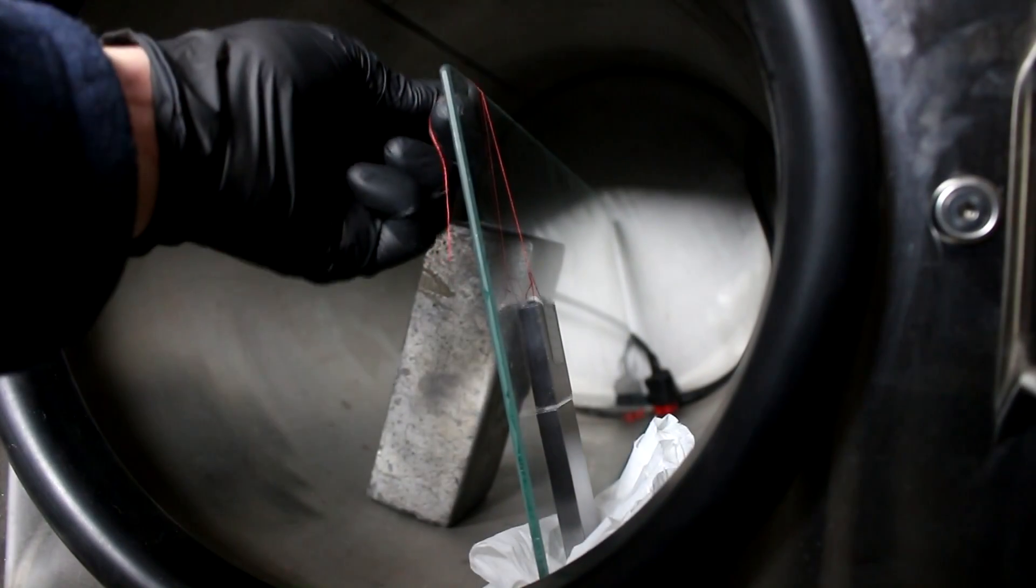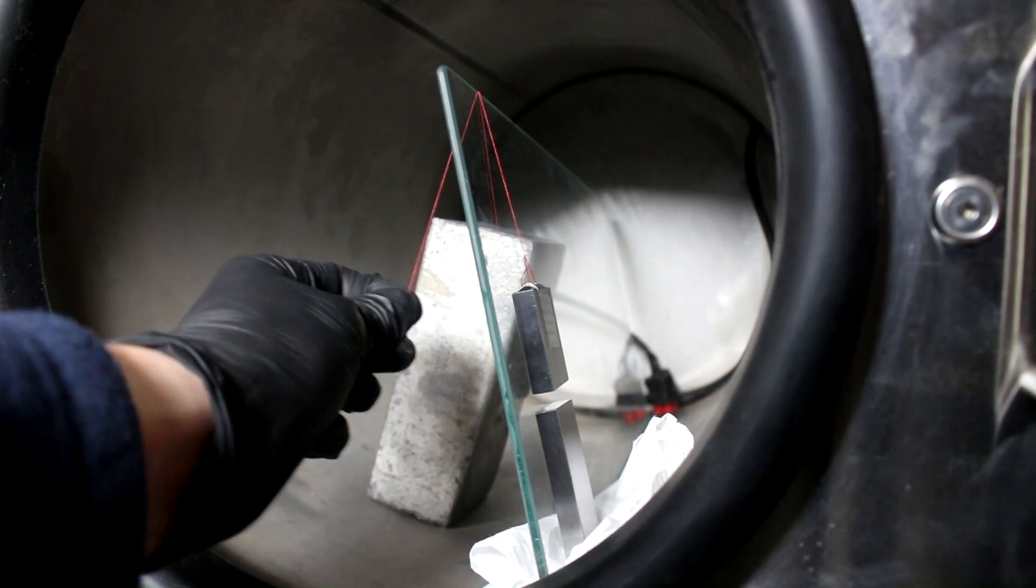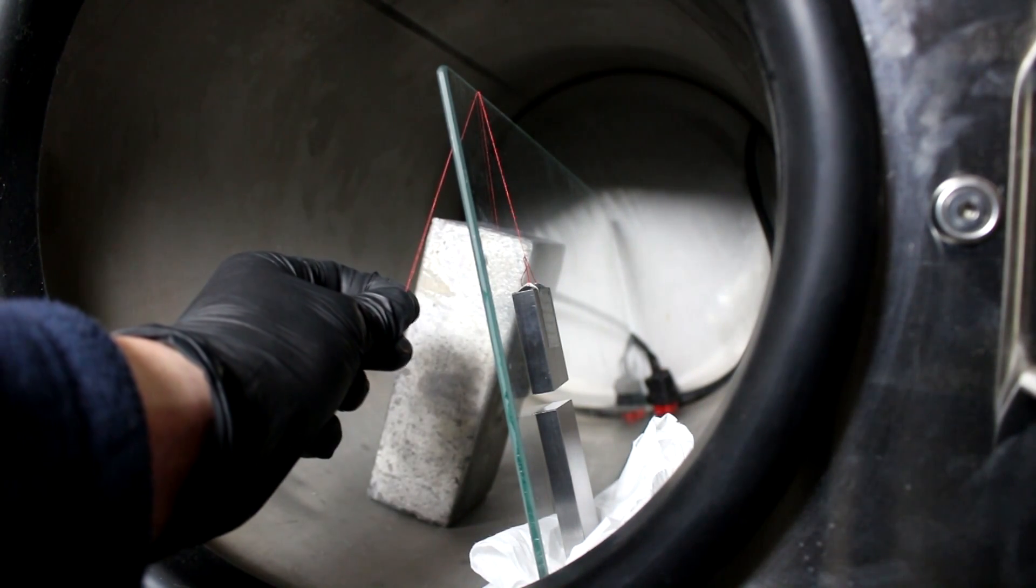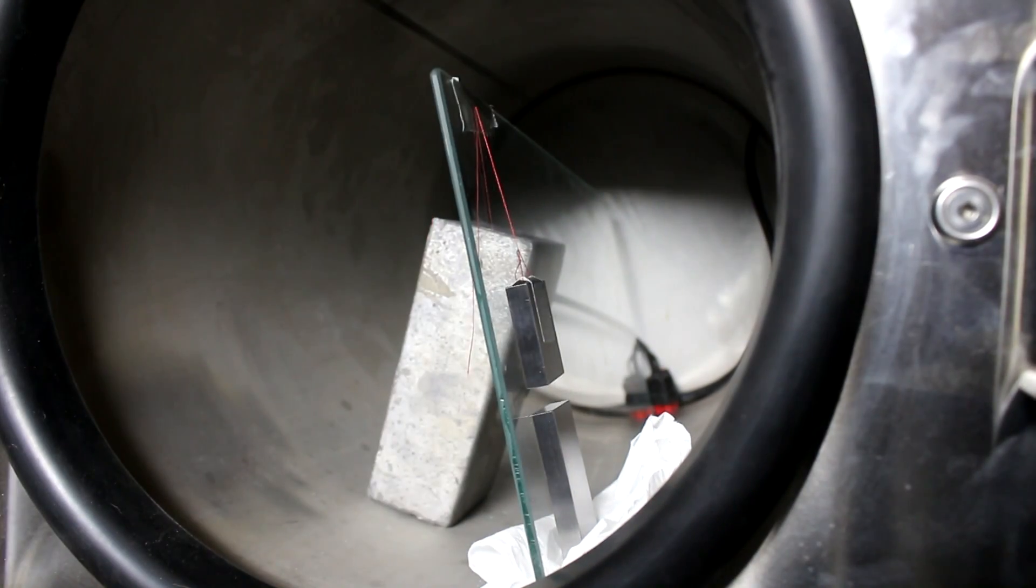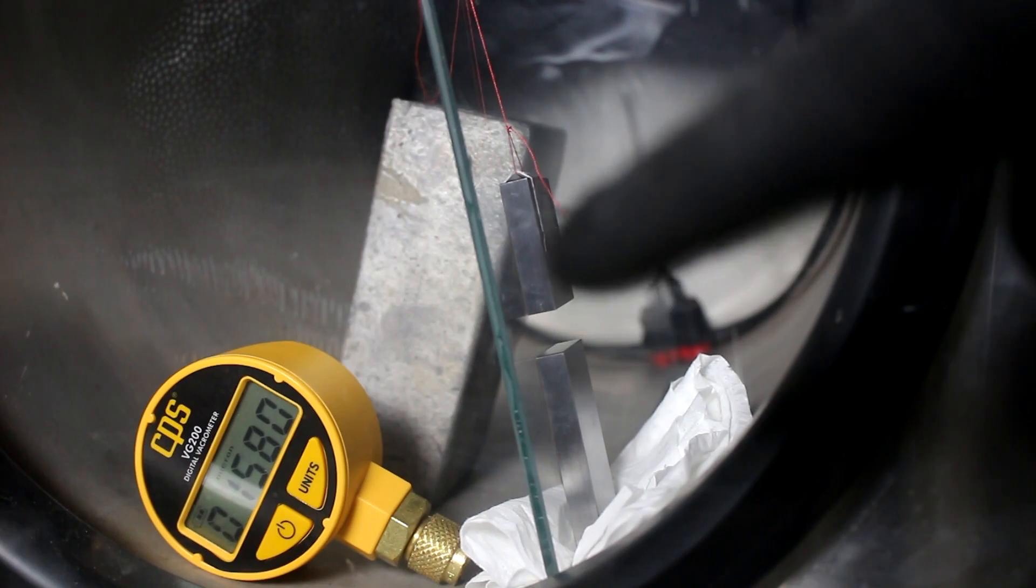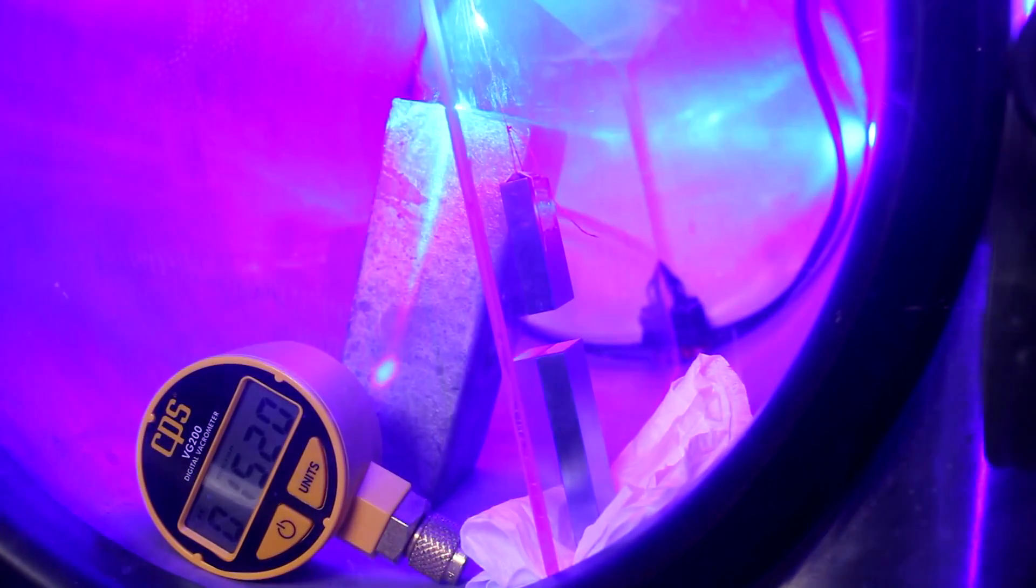You see, I've got the gauge block attached to a string. I can support the string up like this, and I'll cut the string with my laser when it's under vacuum, dropping this gauge block on top of this other gauge block. Let's see if it sticks. So, we're down around 1500 millitorr. So, I'm going to cut the string in three, two, one.